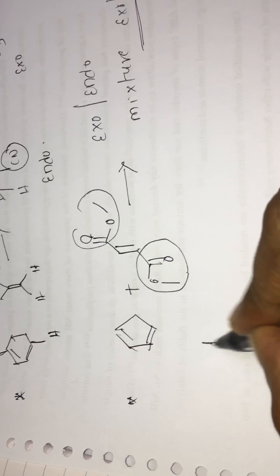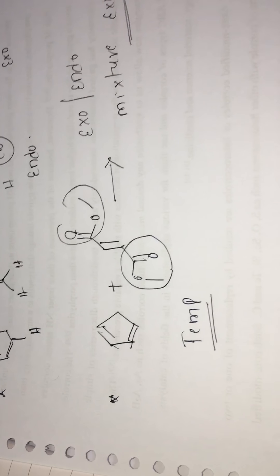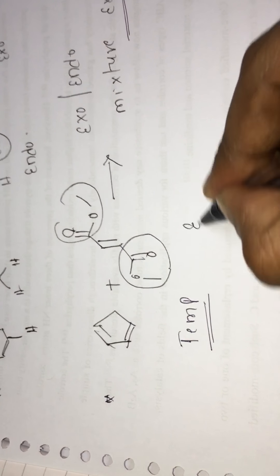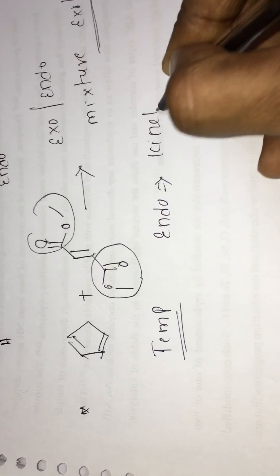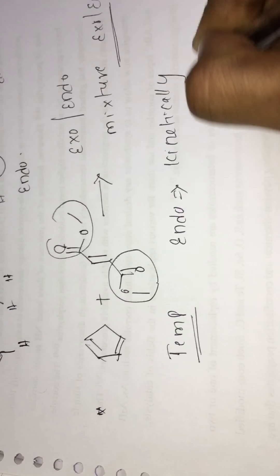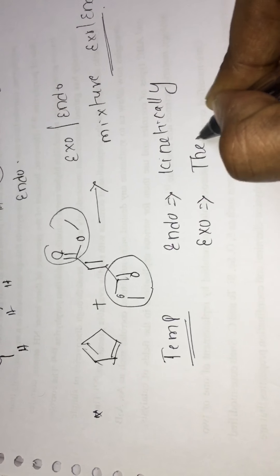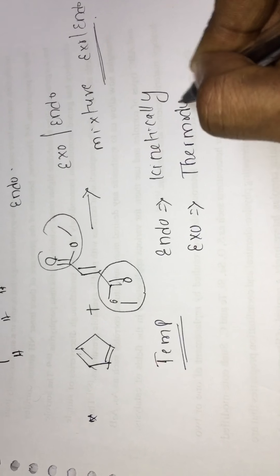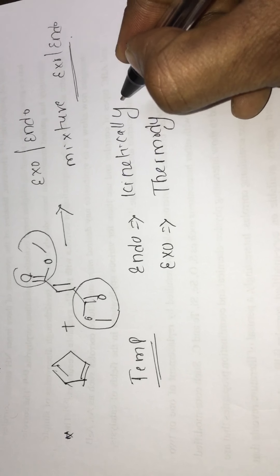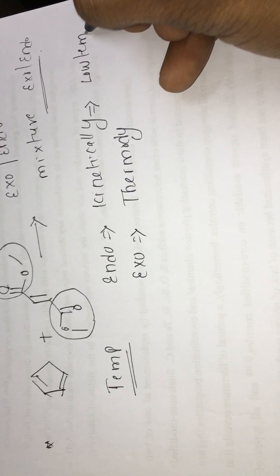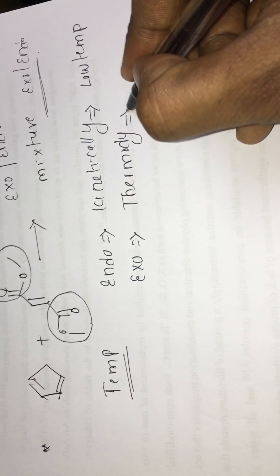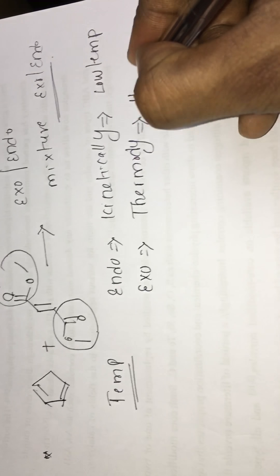Another important point is how temperature affects the endo reaction. Generally, the endo product is kinetically controlled. The kinetically controlled product is the major product at low temperatures, while the thermodynamic product is obtained at high temperatures.